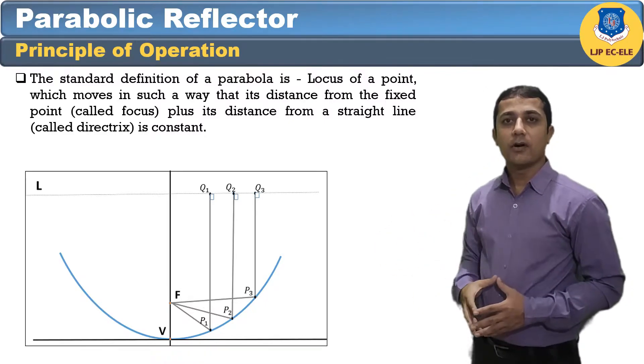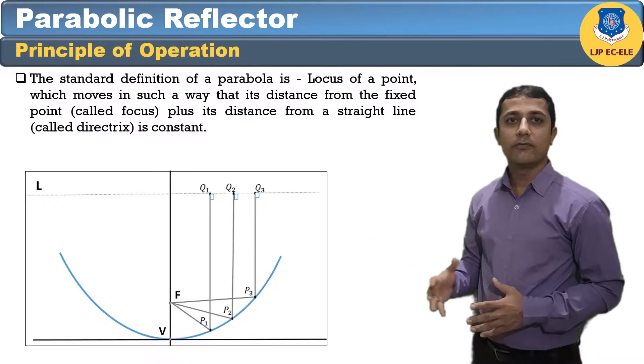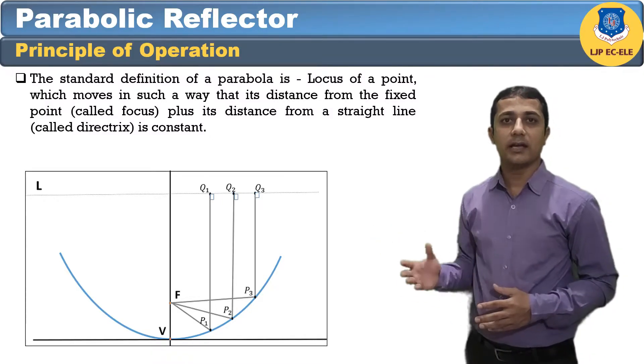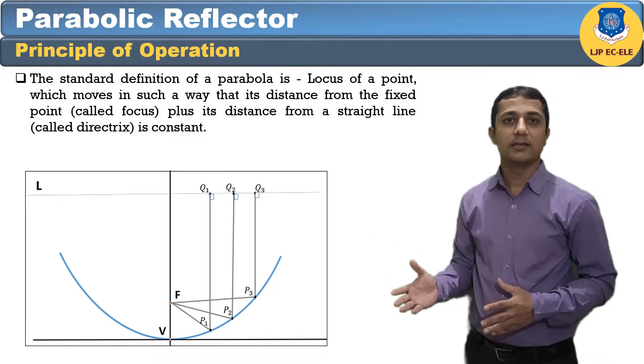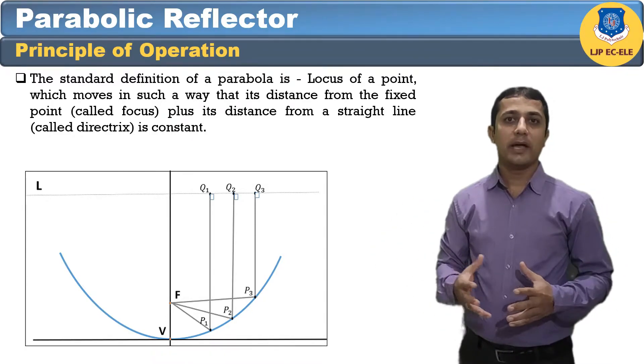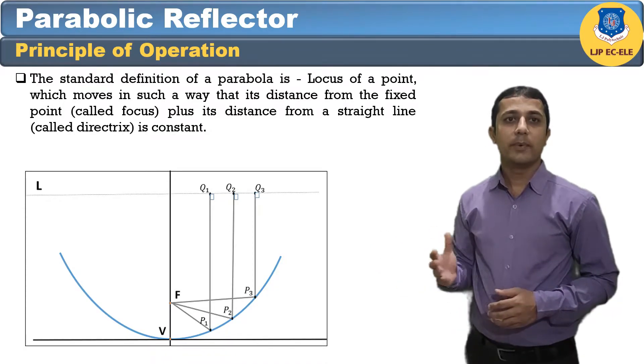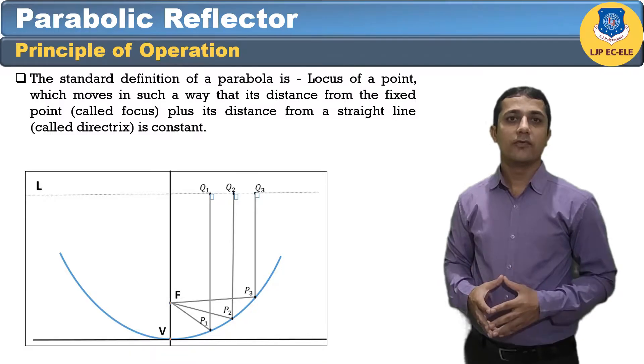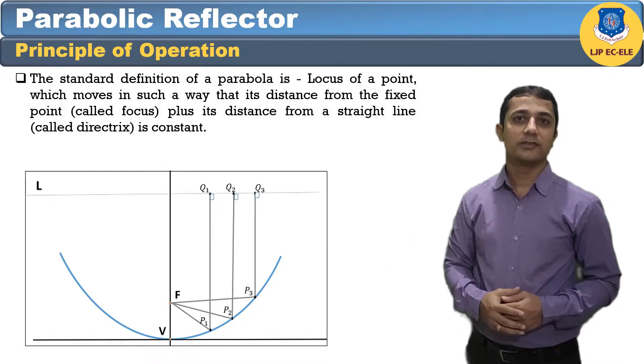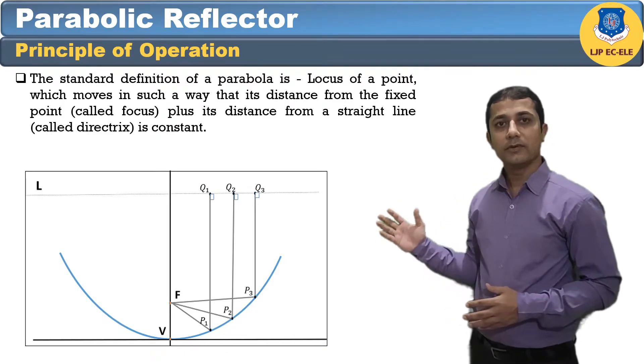The law of reflection states that the angle of incidence and the angle of reflection are equal. This law, when used along with the parabola, helps the beam focus. The shape of the parabola when used for the purpose of reflecting waves exhibits some properties which are helpful for building an antenna using the wave reflected.